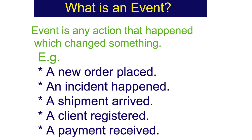Another example is that an incident happens. In an organization we have an incident management system where once an incident happens, certain other applications, systems, and stakeholders are intimated and informed about that incident so that necessary corrective actions may be taken and a mitigation plan gets placed, based on that event. Another example is a shipment arriving for a company — once a shipment arrives, certain actions need to be taken by different departments, an event gets triggered, and based on that event those actions are initiated.